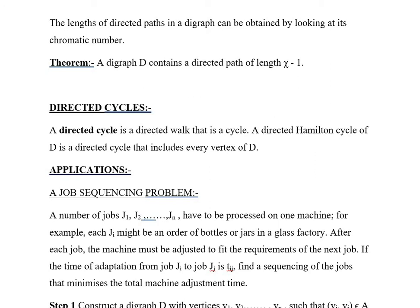Now moving to the applications of digraphs. The first one is a job sequencing problem. A number of jobs J_1, J_2, ..., J_n have to be processed on one machine. For example, each J_i might be an order of bottles or jars in a glass factory. After each job, the machine must be adjusted to fit the requirements of the next job. If the time of adaptation from job J_i to job J_j is t_{ij}, find a sequencing of the jobs that minimizes the total machine adjustment time.